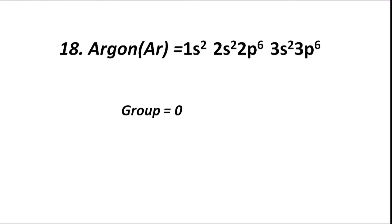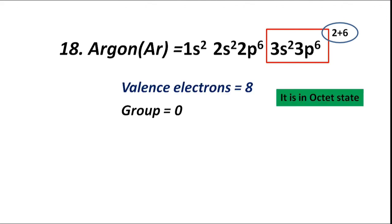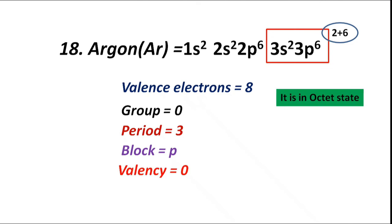Atomic number 18, argon (Ar), has electronic configuration 1s2 2s2 2p6 3s2 3p6. The valence shell is M, with 3s and 3p sub-shells containing total valence electrons 2 plus 6, equal to 8. Valence electrons are 8, which is in octet state, hence group 0. Period 3 — highest coefficient of shell is 3. Block P — valence electrons fill 3p sub-shell. Valency is 0.